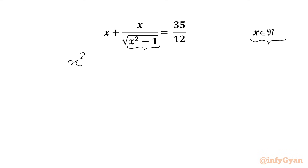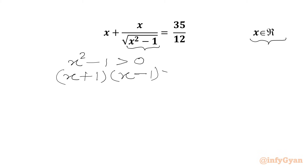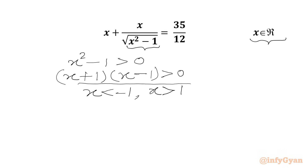For x to be real, the radicand x² - 1 must be greater than 0. Using the difference of two squares formula, we can write (x + 1)(x - 1) > 0. From here we get two inequalities: either x < -1 or x > 1, and then we get x real.